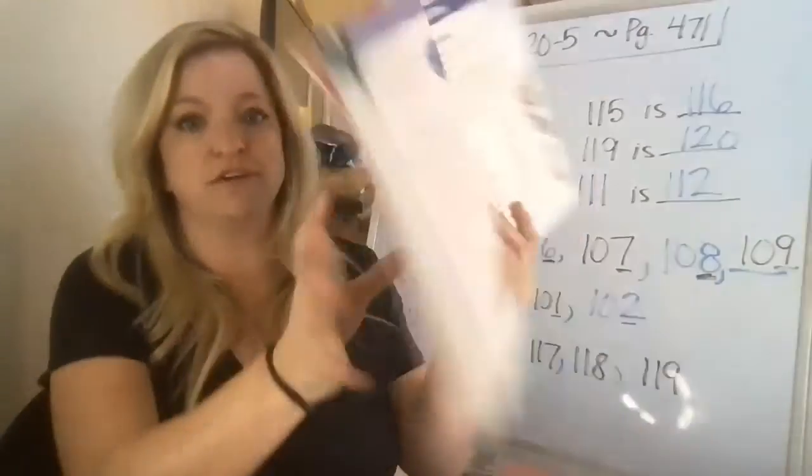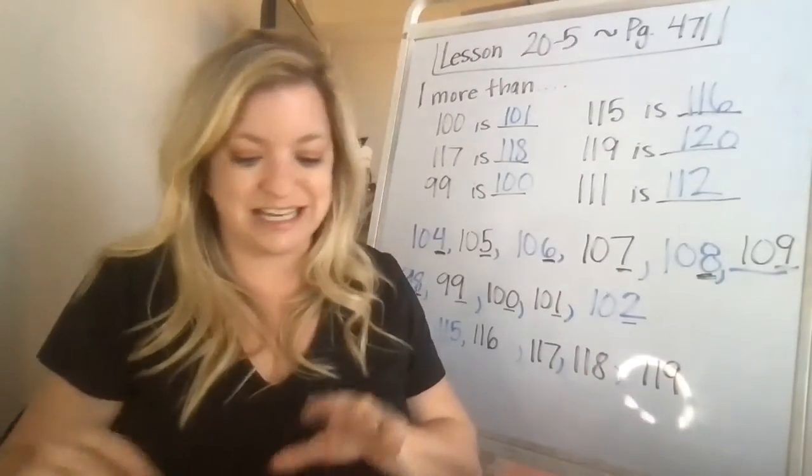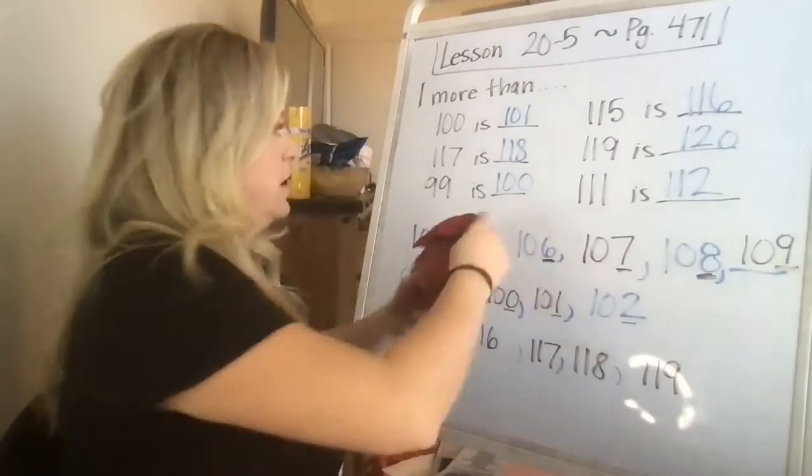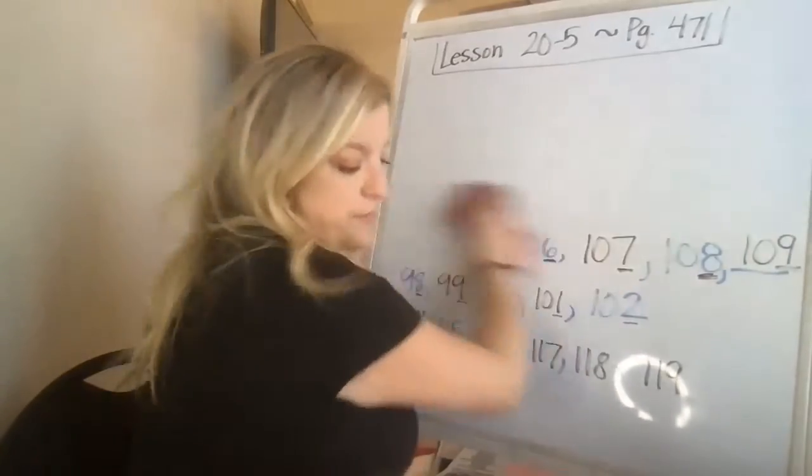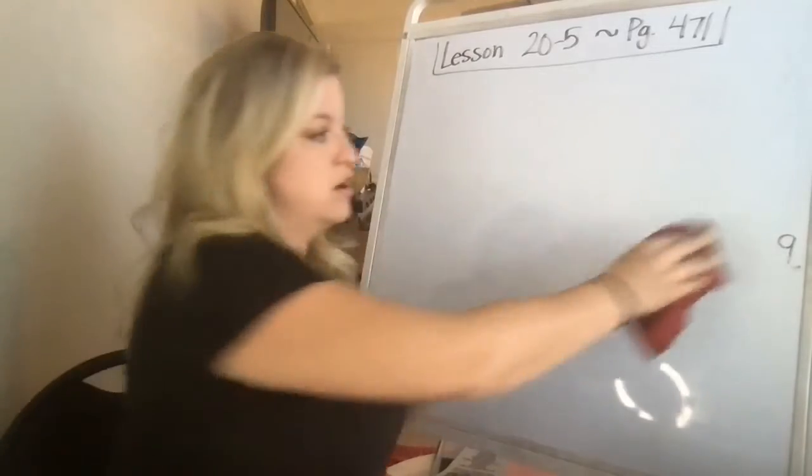It's our last math page of the week before we take the test. And it looks like this. All right, at the top, it says Gene has 60 cookies in a box. There are some more on the tray. How many cookies in all?